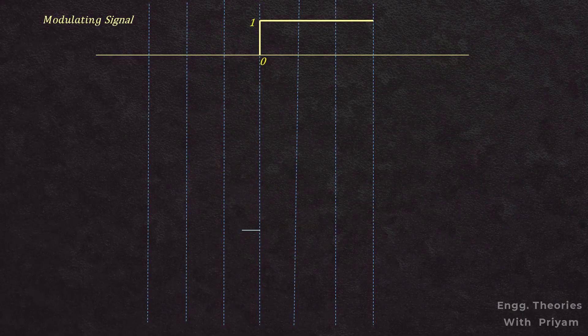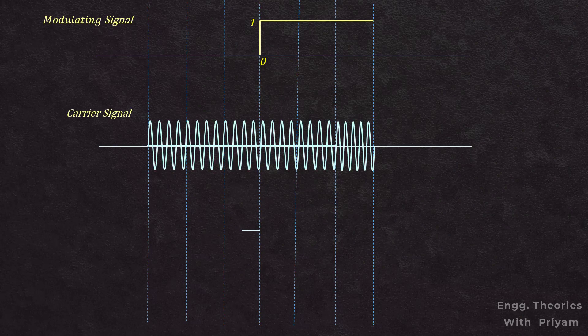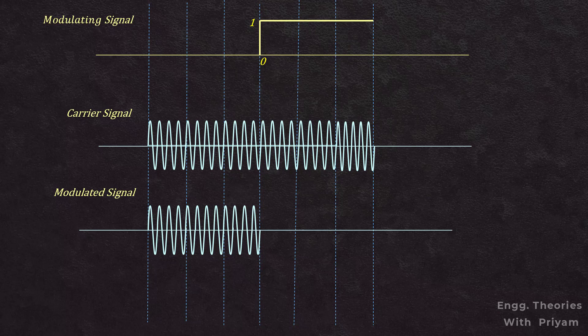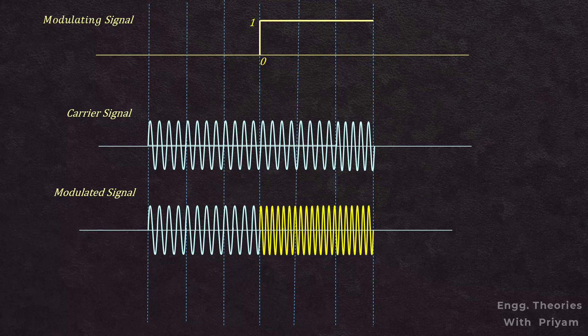For the unit step signal, the value is equal to 1 when t is greater than 0. We take a sinusoidal carrier signal and the unit step signal as the modulating signal to observe frequency modulation. For FM, when t is less than 0, the amplitude of the modulating signal is equal to 0, so the FM signal is the same as the carrier signal. When t is greater than 0, the amplitude equals 1, and the frequency of the FM signal increases in accordance with the modulating signal m(t).